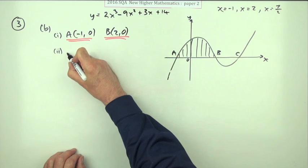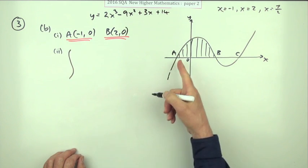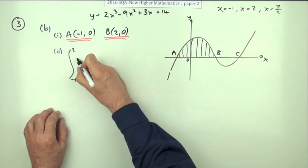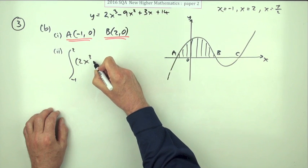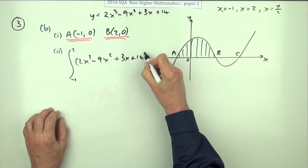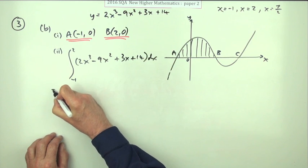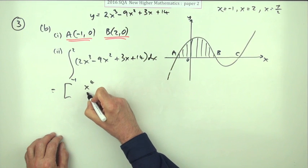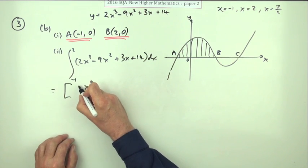So what's the shaded area then? Well the shaded area must go from negative 1 to 2 of this whole thing. Unfortunately, if I let myself enough room: 2x cubed minus 9x squared plus 3x plus 14 dx. So integrating that: up to 4 divide by 4, I'll just do that at the same time, 2 over 4 is a half.